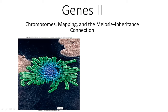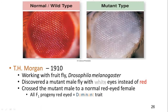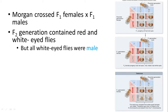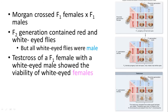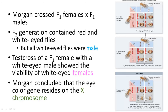T.H. Morgan in 1910 worked with fruit fly Drosophila melanogaster and discovered a mutant male fly had white eyes instead of red. He crossed the mutant male to a normal red-eyed female and all showed the dominant trait. He then crossed F1 females with F1 males, and the F2 generation contained red and white-eyed flies, but all white-eyed flies were male. A test cross of an F1 female with a white-eyed male showed some females could be white-eyed. Morgan concluded the eye color gene must reside on the X chromosome.